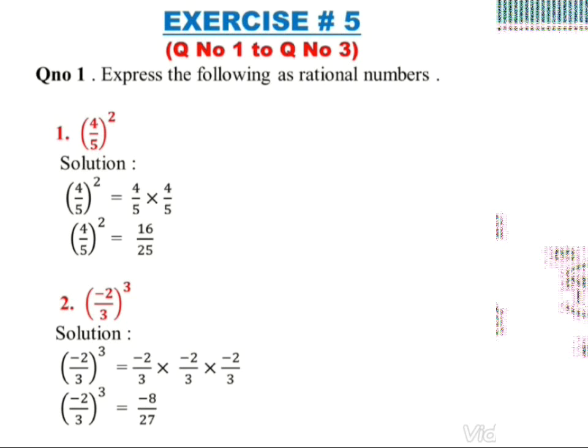The second part is (-2/3) to the whole power 3. The base is -2/3 and the exponent is 3, meaning -2/3 appears three times. So: (-2/3) × (-2/3) × (-2/3). For the sign: minus × minus × minus gives minus. Numerator: 2×2×2 = 8, so numerator is -8. Denominator: 3×3×3 = 27. Therefore (-2/3)³ = -8/27.